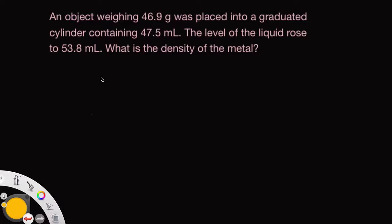William asks us to calculate the density of a metal object, and we are given the mass of the object. It's 46.9 grams.